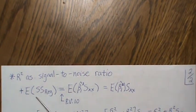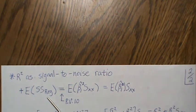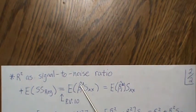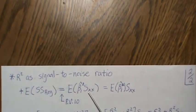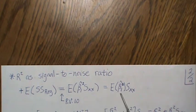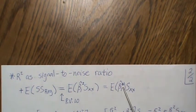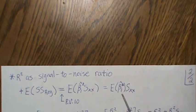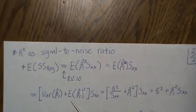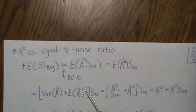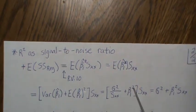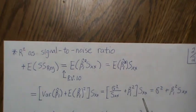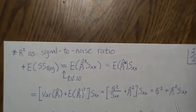To see why, consider the expected value of the regression sum of squares. From a previous video, SSR can be written in terms of beta-hat_1 squared. Taking the expected value of beta-hat_1 squared uses the variance plus the squared expected value of beta-hat_1. We know those quantities: sigma² / Sxx and beta_1². Multiplying through by Sxx, we get the expected value of SSR.